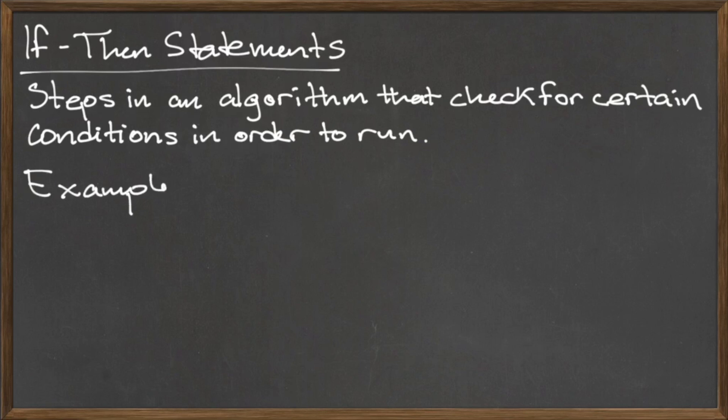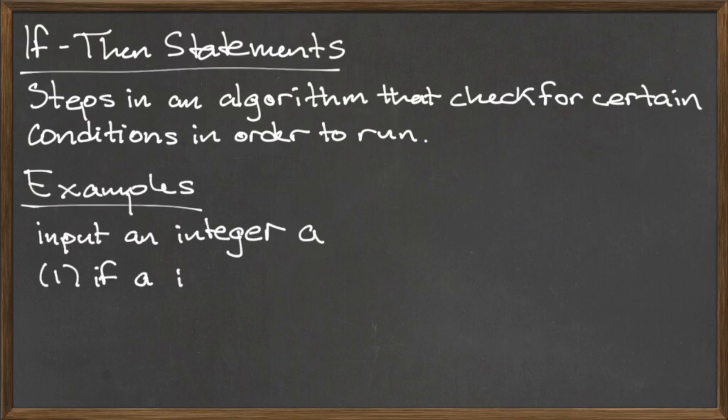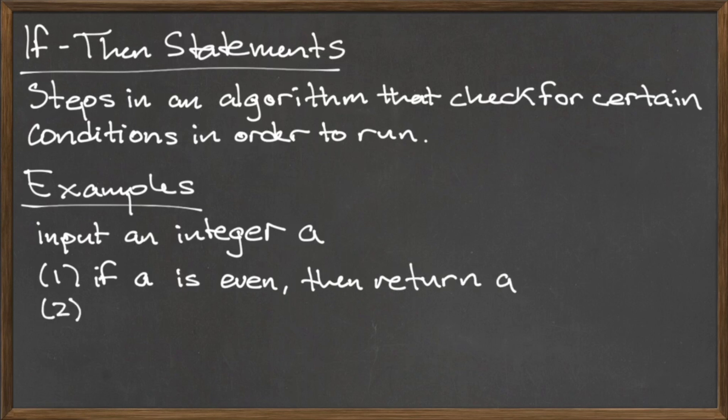Consider the following example of an if-then statement in action. Below is an algorithm that accepts as input an integer a and consists of two steps. Step one is the conditional statement: if a is even, then return a. Step two is to return zero.